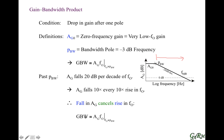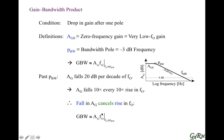Going back to the gain bandwidth product: the gain drops by a factor of 10 as frequency increases by a factor of 10, which is the same factor. So in the gain bandwidth product, across that frequency range — specifically at frequencies greater than the bandwidth pole — the gain bandwidth product is constant.